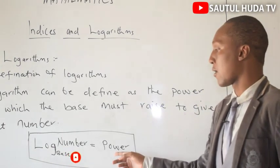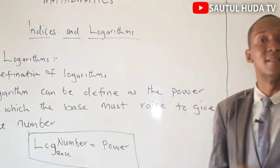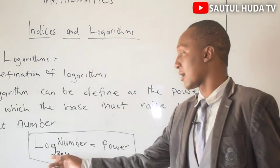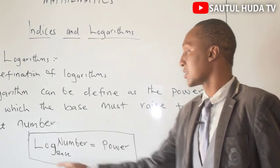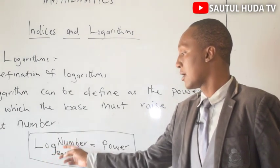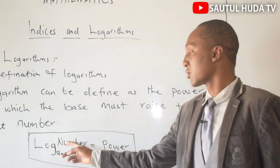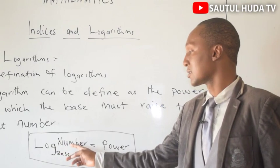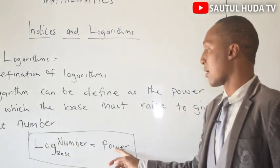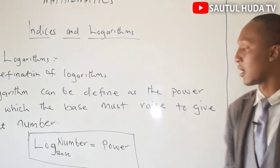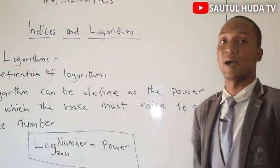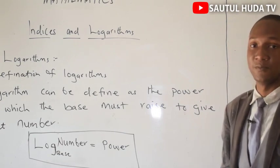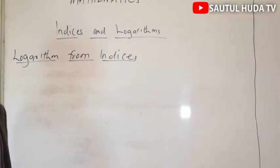The representation is: log of number to base equals power. So you can see the components - number, base, and power. This is the definition of logarithm.